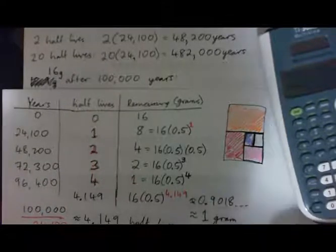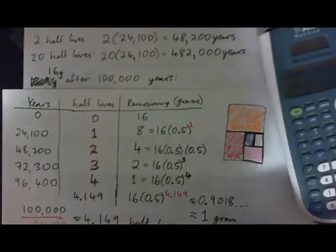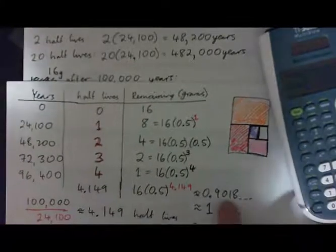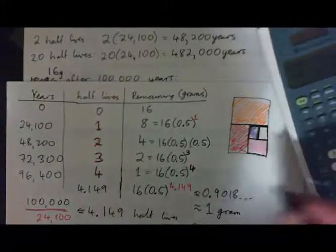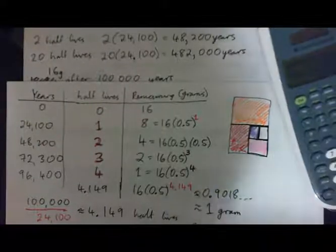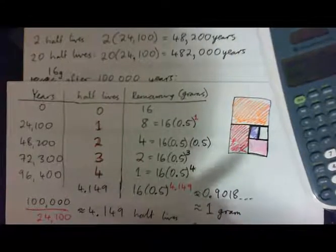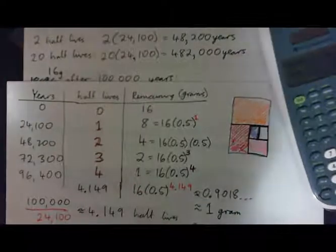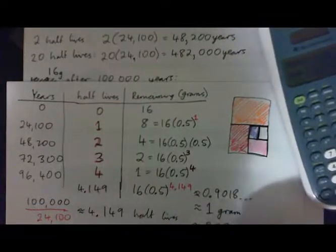Round it to the nearest gram, it's approximately 1 gram. If you were to round that to the nearest milligram, what would you do? Remember there are 1,000 milligrams in 1 gram. So to the nearest milligram, that would be 902 mg.